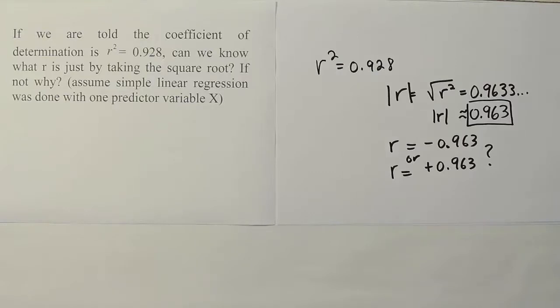So of course, but if we don't have that information, we have no way to know for sure what r actually is. We can say that its absolute value though is 0.963. That indicates a strong linear relationship. We just don't know whether it's a strong negative linear relationship or a strong positive linear relationship.